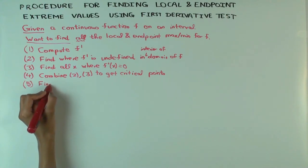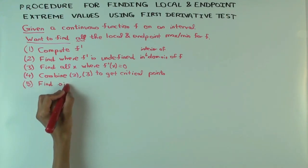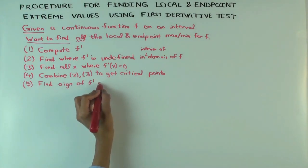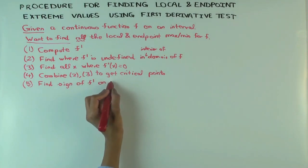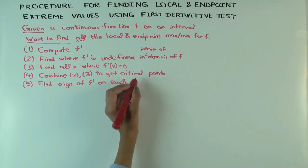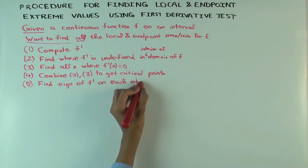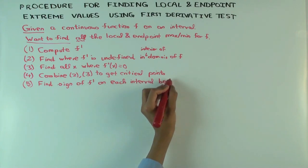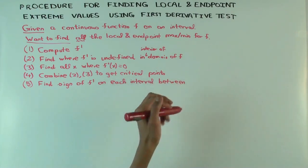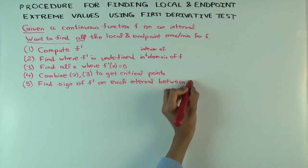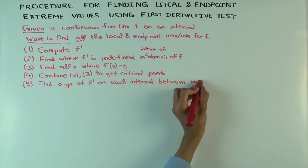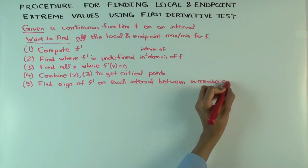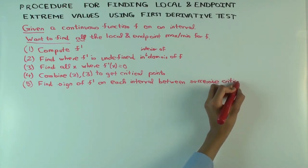The next thing — this is what you do in order to be able to apply the first derivative test — is to find the sign of F prime on each interval between successive critical points. This doesn't make sense if you have too many critical points clustering, so I'm assuming the function behaves nicely enough. Nice functions behave nicely.